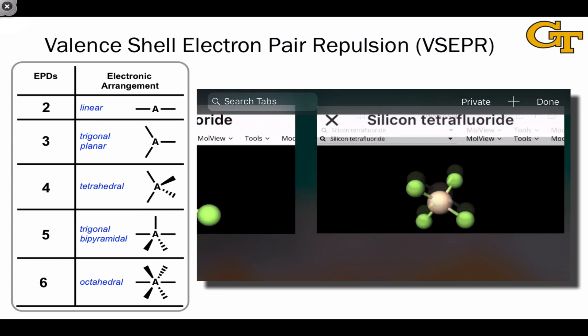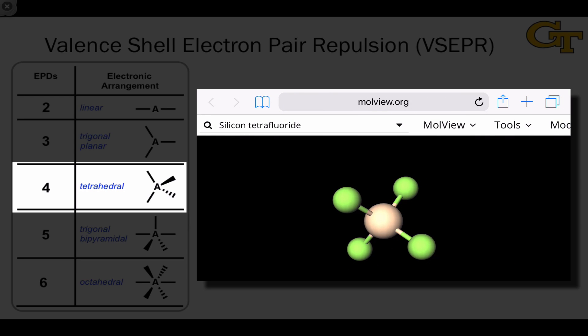When we move to four electron pair domains, we finally get to the third dimension, and this is the tetrahedral electronic arrangement. Silicon tetrafluoride is a classic example, as is sp3 hybridized carbon. We see a 109.5-degree bond angle between two adjacent SiF bonds, with an arrangement where two bonds are in the plane of the screen, one projects out towards us, and the other projects behind the screen.